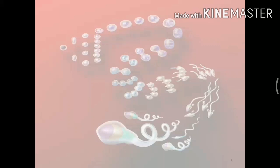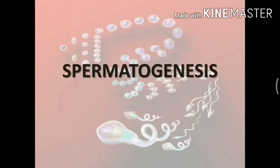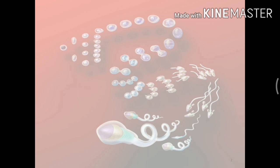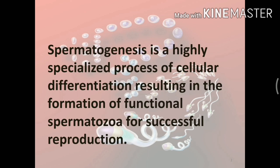Welcome back to our channel. Today we will talk about spermatogenesis, the most wanted topic of every biology student. Spermatogenesis is a highly specialized process of cellular differentiation resulting in the formation of a functional spermatozoa for successful reproduction. Basically, the process takes place in the seminiferous tubules present in each testis.